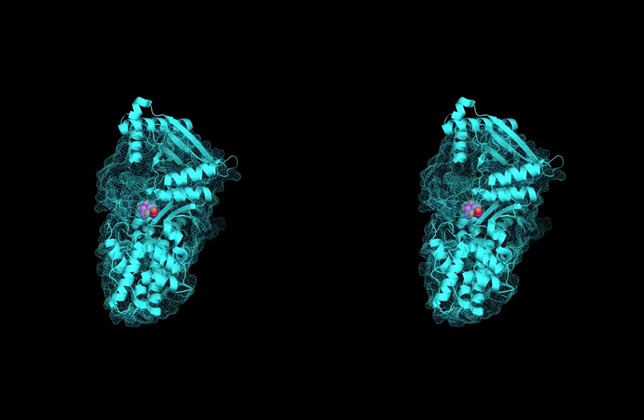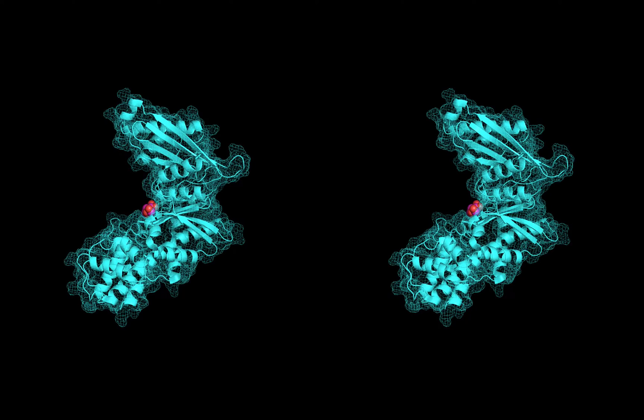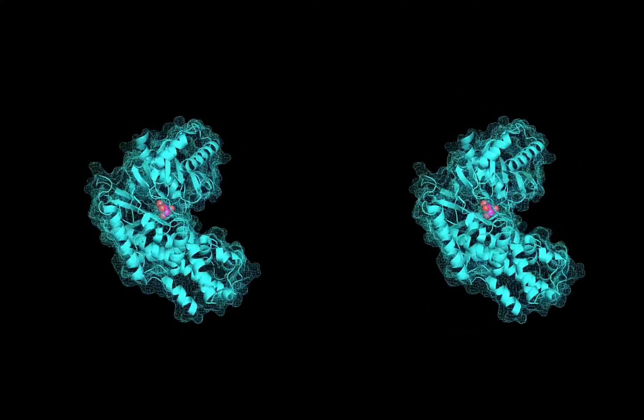Let's check that out one more time. When unbound, glucokinase is wide open. Glucose binds, and the protein changes shape and closes down around it. So cool.